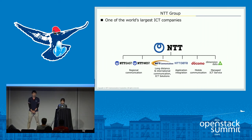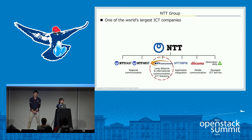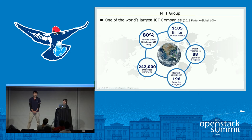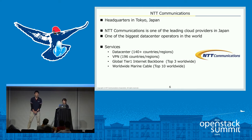We are from NTT Group, one of the world's largest ICT companies. Our company, NTT Communications, belongs to this group. This graph shows some figures about NTT Group. NTT Group is Fortune Global 100, and we have $105 billion in total revenue. NTT Communications is headquartered in Tokyo and is one of the leading cloud providers in Japan and one of the biggest data center operators in the world.